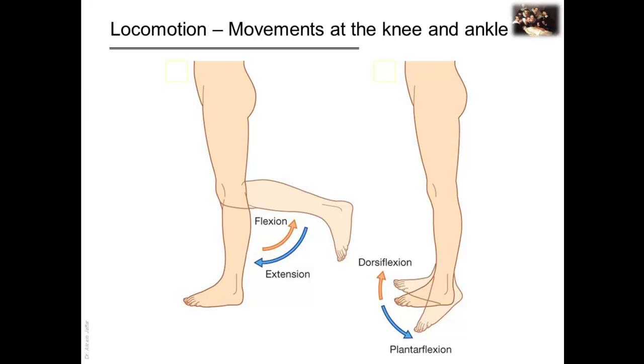At the knee and ankle, both of them are primarily hinge joints. So, like other hinge joints in the body, movements at the knee are mainly flexion and extension. Movements at the ankle are dorsiflexion, which is movement of the dorsal side of the foot toward the leg. This is actually extension, and plantar flexion, which is the true flexion.